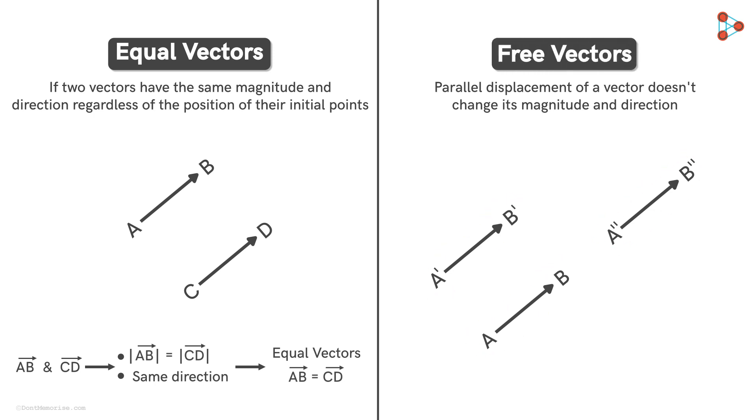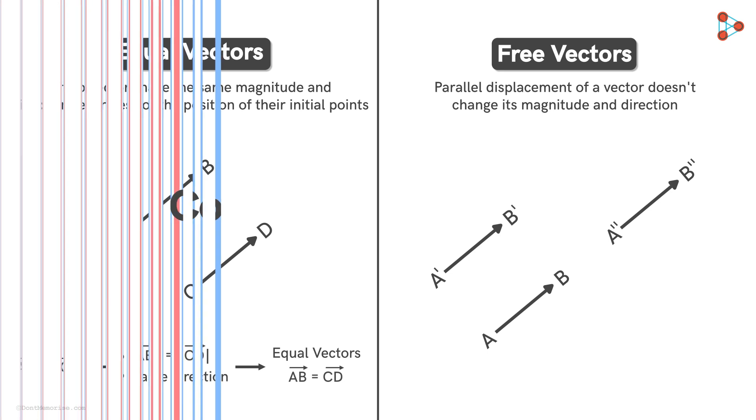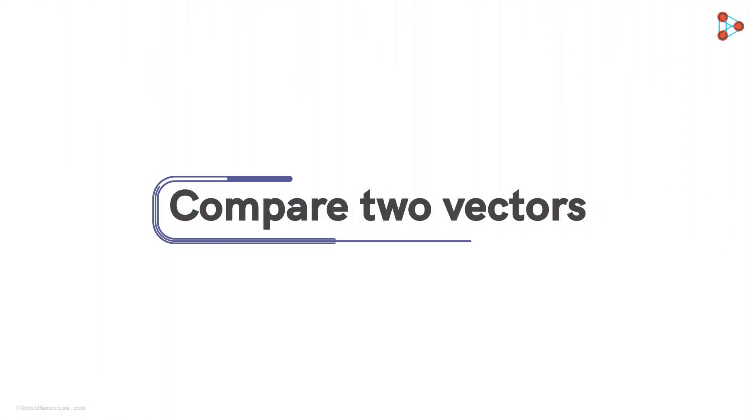That is, parallel displacement of vectors gives us equivalent vectors. One advantage of this is that it makes it easier to compare two vectors.